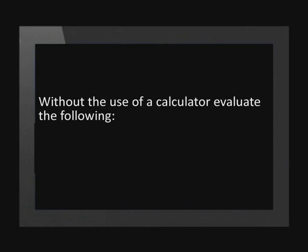Okay, let's get started with our first question. Without the use of a calculator, evaluate the following: sine(135°) times cos(15°), all over sine(75°). The wording 'without a calculator' indicates that we will be working with special angles. This will work with sine(135°) because when we reduce the angle it gives us 45 degrees. But it won't work for cos(15°), nor for sine(75°).